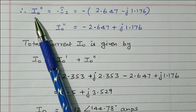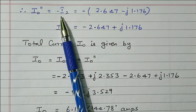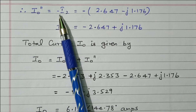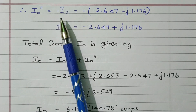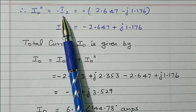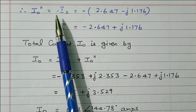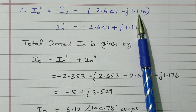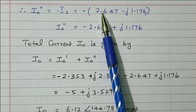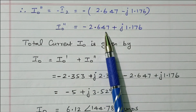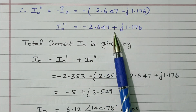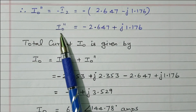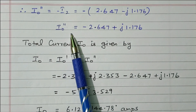I₀ double dash equals minus I2, because by inspecting the diagram, I₀ double dash flows upward while I2 flows downward — opposite directions. So I₀ double dash = −(−2.647 + j1.176) = minus 2.647 plus j1.176, giving I₀ double dash = −2.647 + j1.176 amperes. This is the current due to the current source alone.